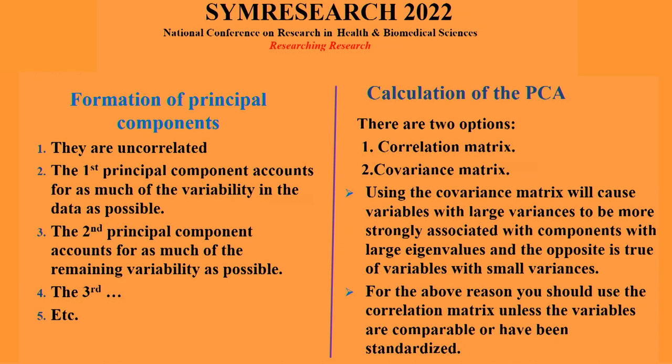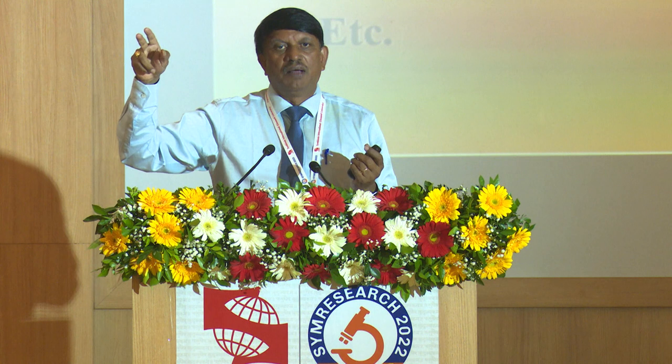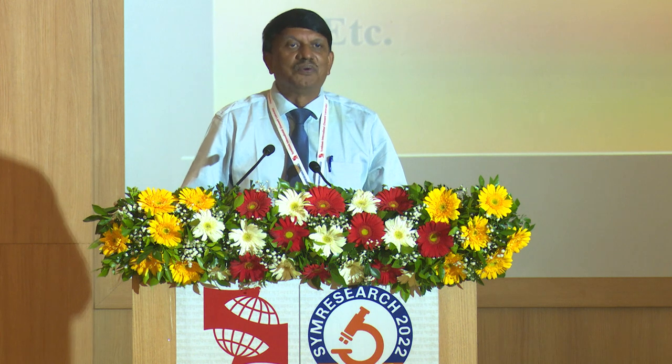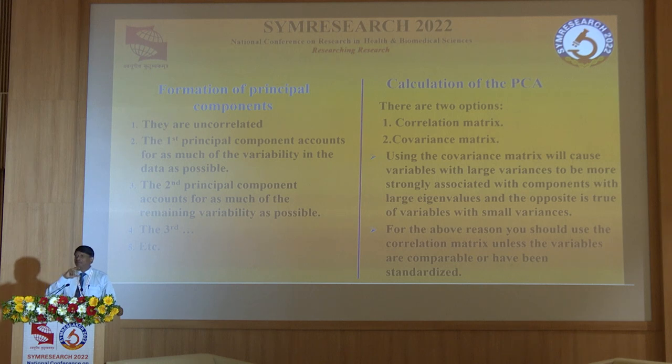How do principal components form? Once formed, the dimension is reduced in order. The first principal component explains the maximum variance, followed by the second, third, and so on. But all the five linear combinations or principal components are uncorrelated between themselves. What is the advantage of that? In regression, the assumption is that independent variables are uncorrelated — but most of the time they are correlated. You check that — multicollinearity. To remove multicollinearity, this is the best procedure: make all variables into principal component scores, then apply as independent variables. Because principal component scores are uncorrelated once evolved.